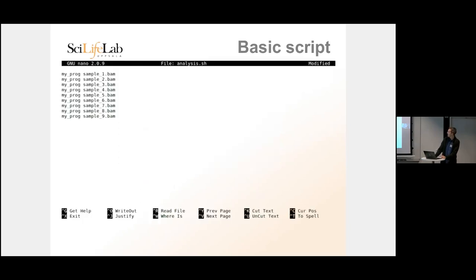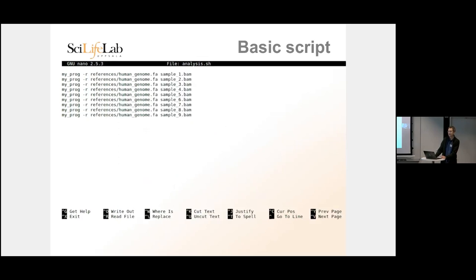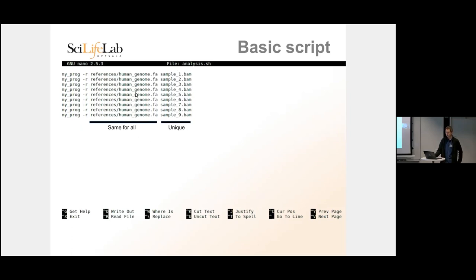Sometimes it's not only samples — maybe you have a reference genome or some options for a program, so there's even more typing and repetitive content on each line. You see this reference thing is always the same, whereas the file name column is always unique. We have to solve this in two different ways: how do we get rid of the repetitive data, and how do we handle the unique parts?